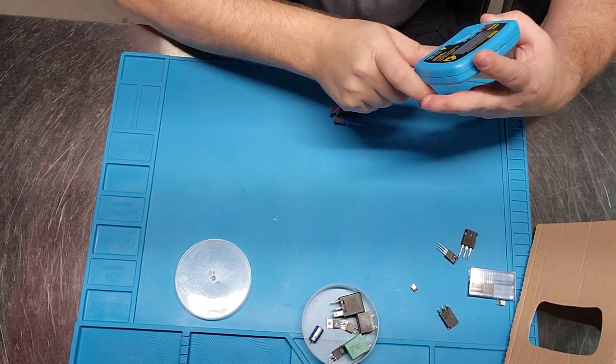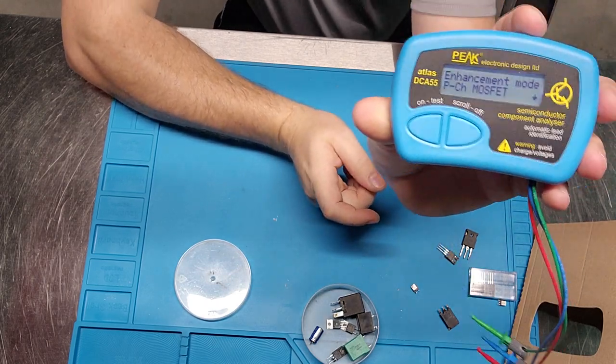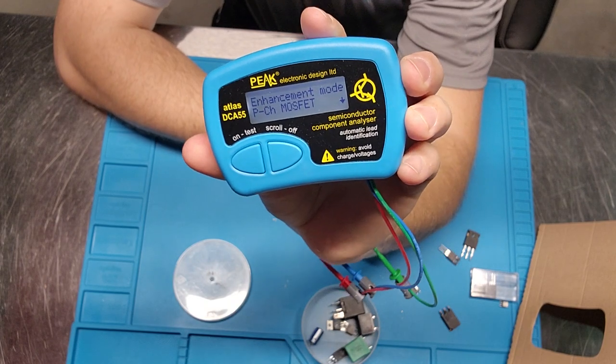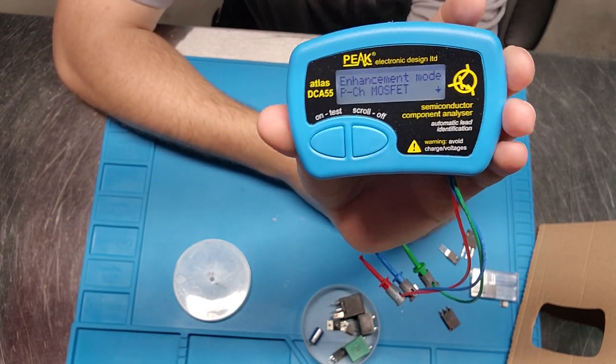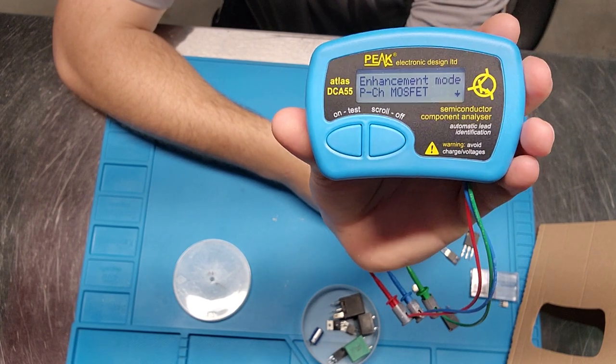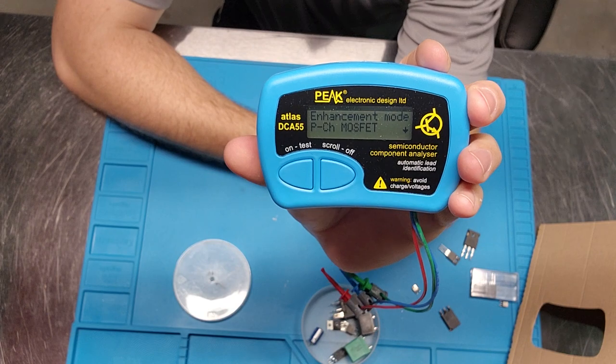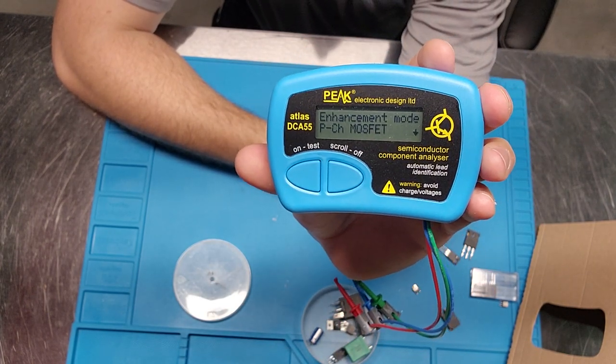So anyway guys, this is a Peak Electronic Design Atlas DCA-55. I haven't tested it in circuit yet, but I would imagine that probably its results are going to show you at least if you've got short circuits. Might not be able to identify accurately in circuit, but close enough. So neat little device. Definitely going to be part of my kit from now on.